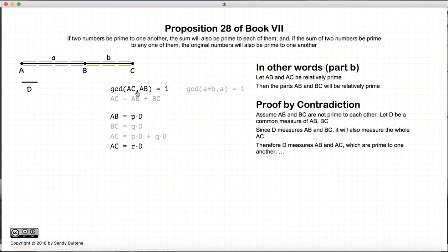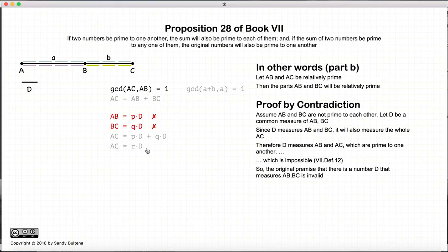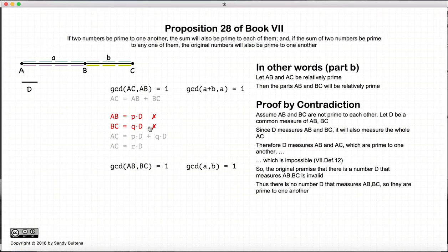So we have that AC and AB are relatively prime, and they have a common measure, which is impossible. So there is our contradiction. So the initial assumption that AB and BC have a common measure, d, is invalid. And if that's invalid, then AB and BC are relatively prime.